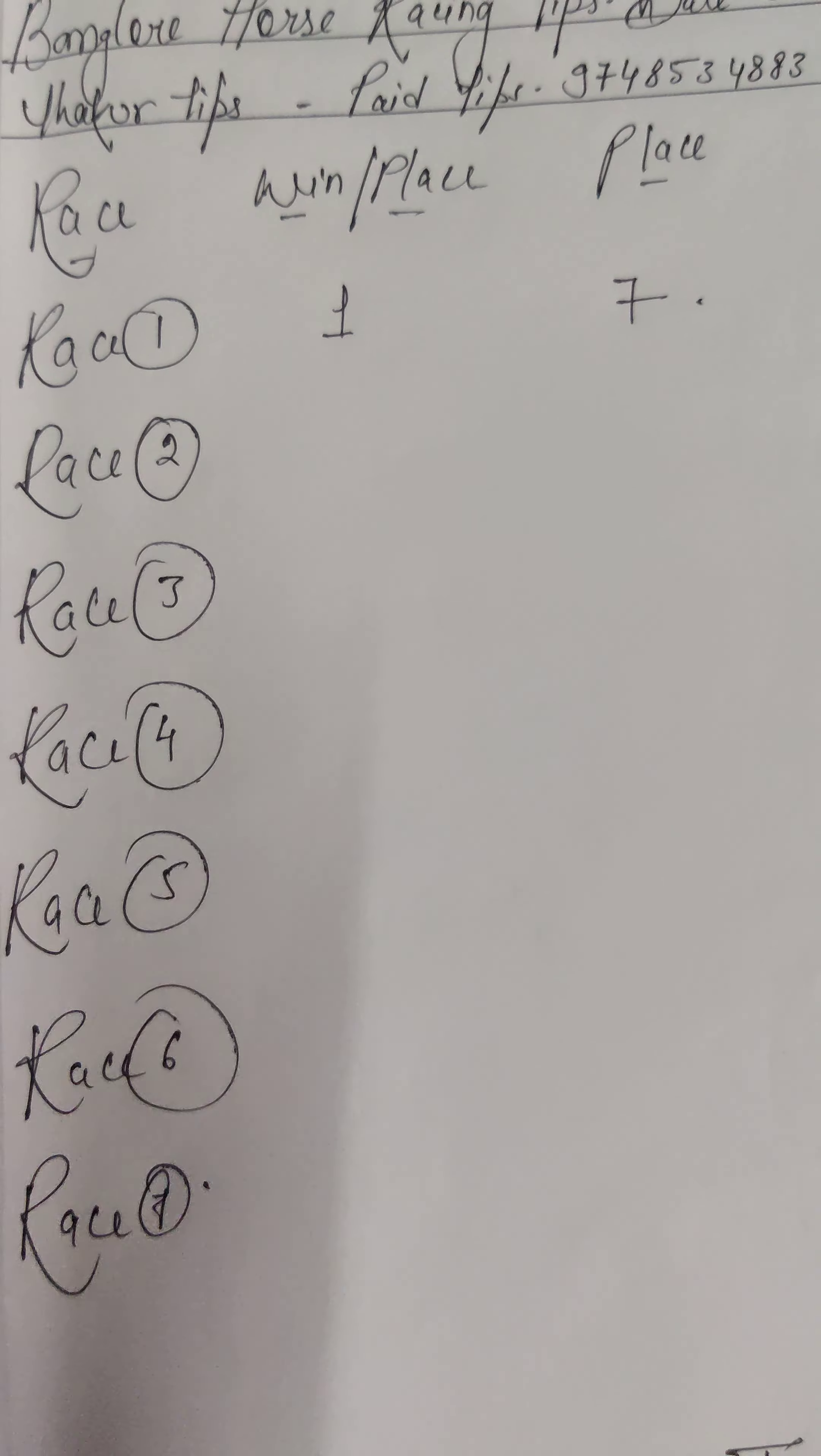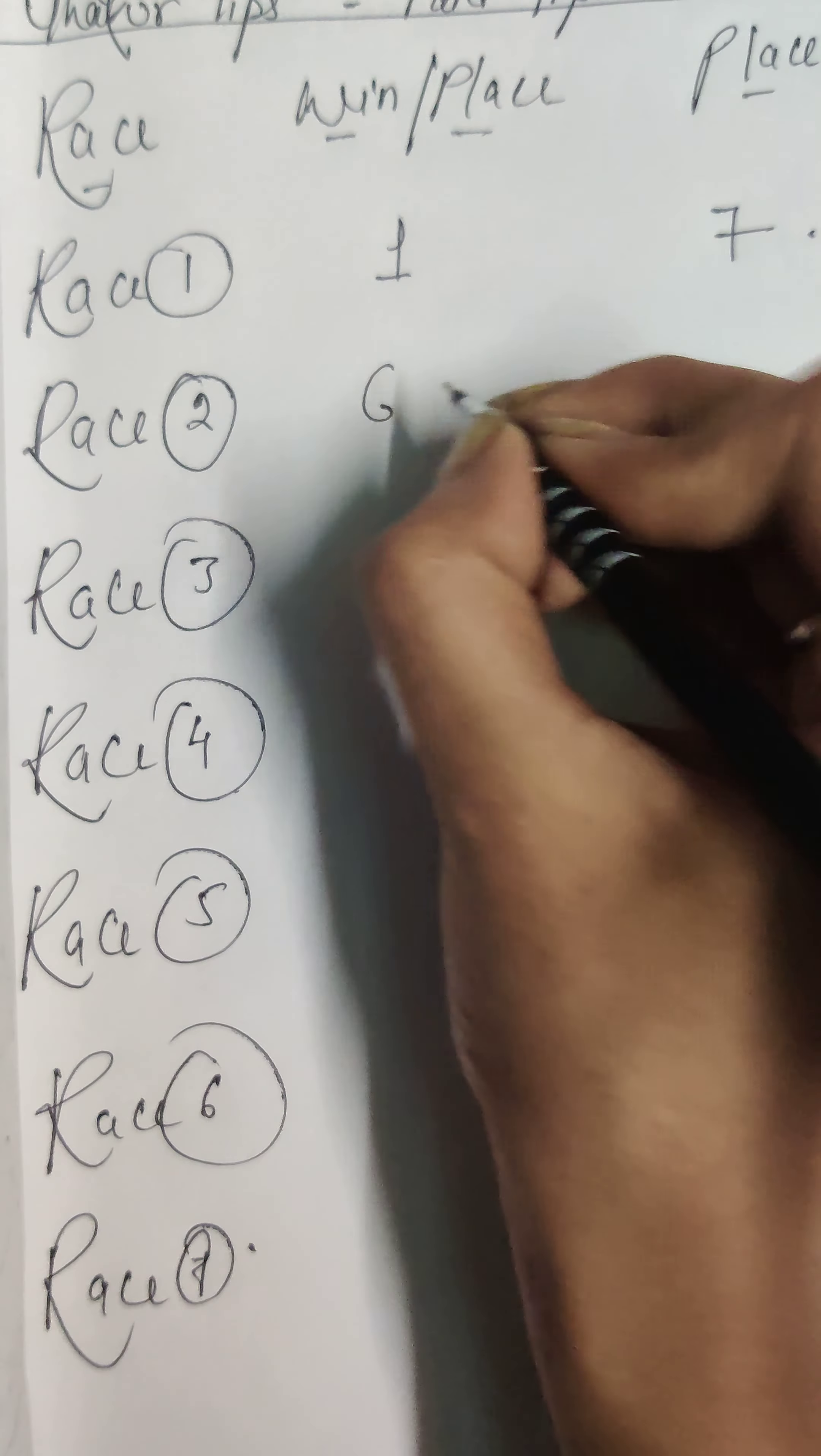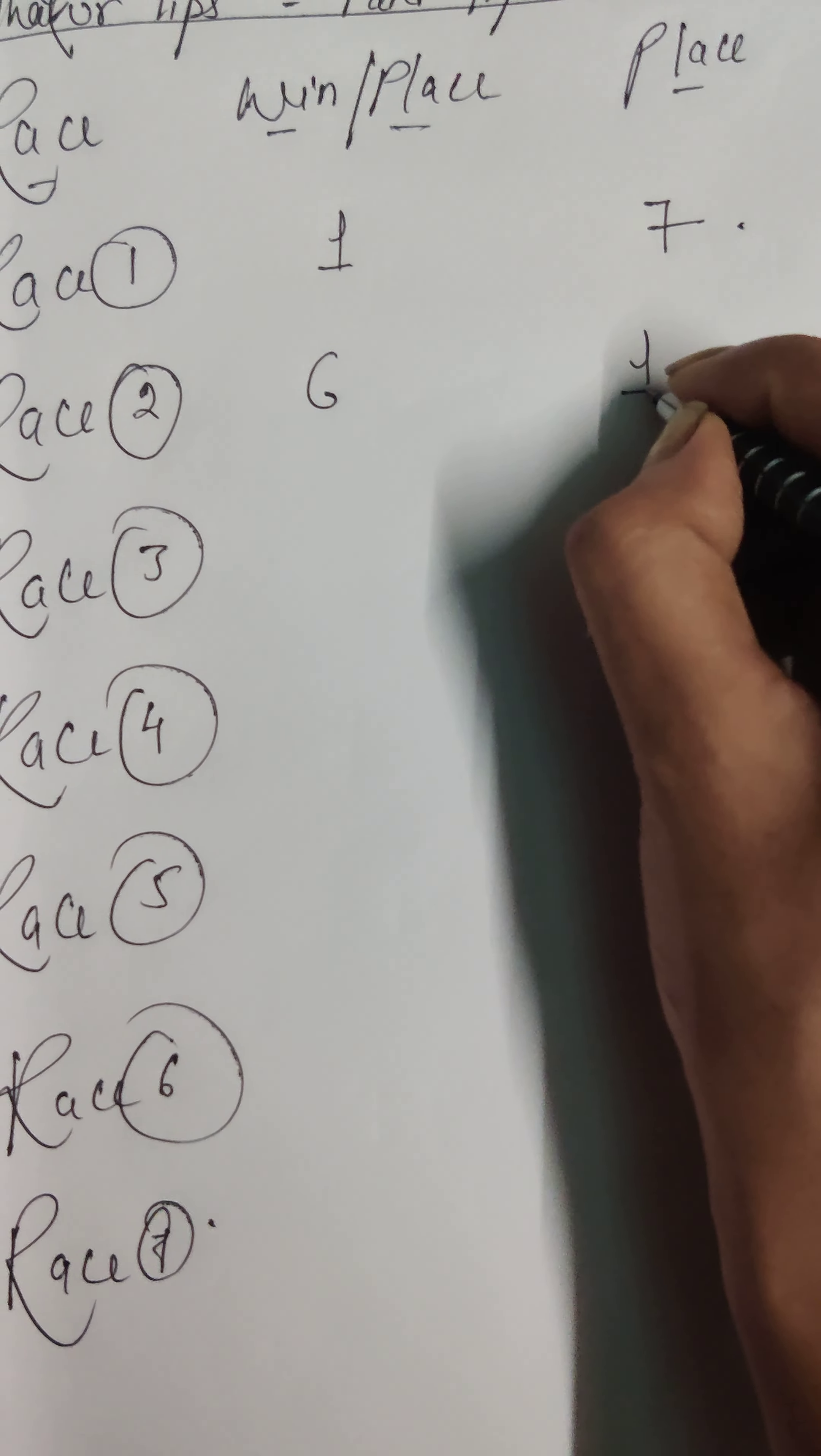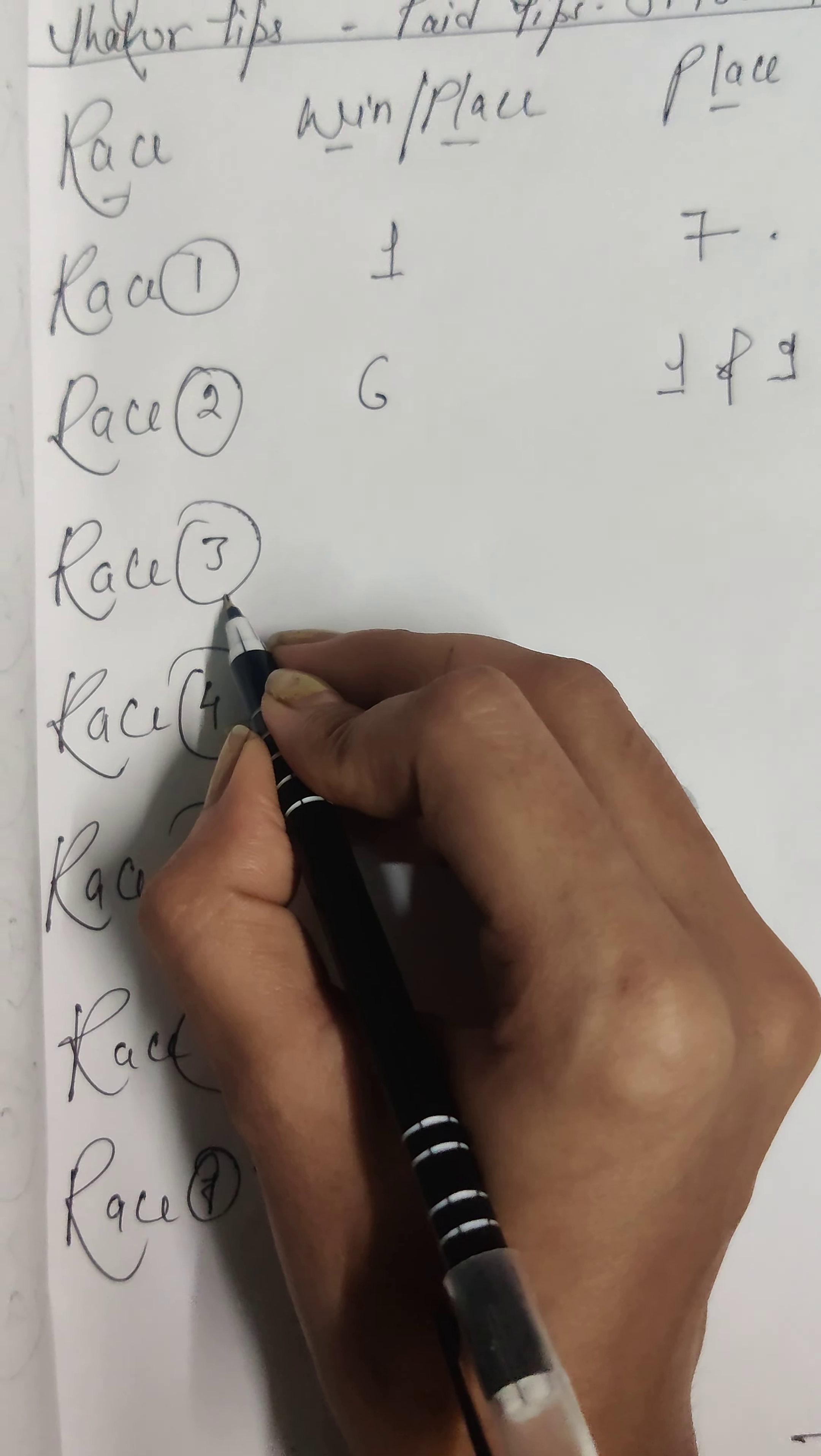Race number 2, my first choice is horse number 6. My second choice is horse number 1, and my third choice is horse number 9.